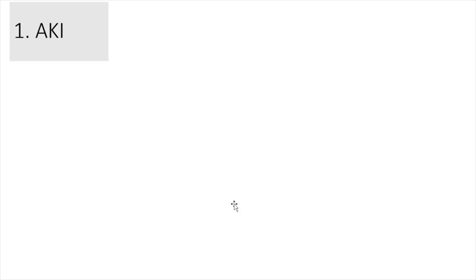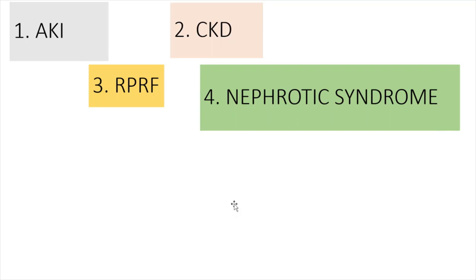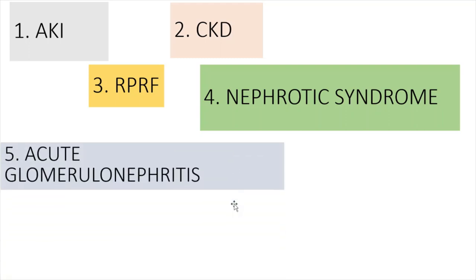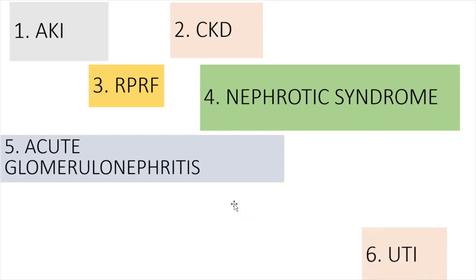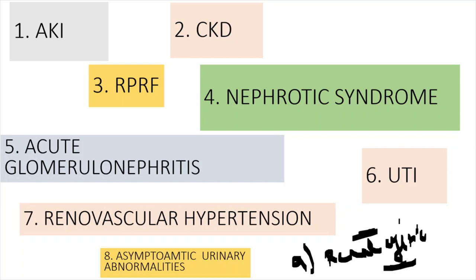The nephrological syndromes overall are: acute kidney injury, chronic kidney disease, rapidly progressive renal failure — this has been added to make concepts clear for entrance exams, as Davidson's does not clearly mention the time duration. Other important syndromes are nephrotic syndrome, active glomerulonephritis or nephritic syndrome, urinary tract infection, renal vascular hypertension, asymptomatic urinary abnormalities, and cystic renal disease. These are the nephrology-related diseases that fall under any of these categories.